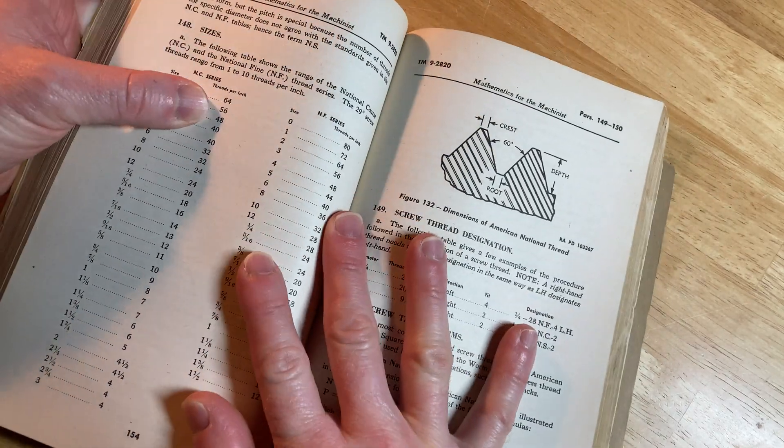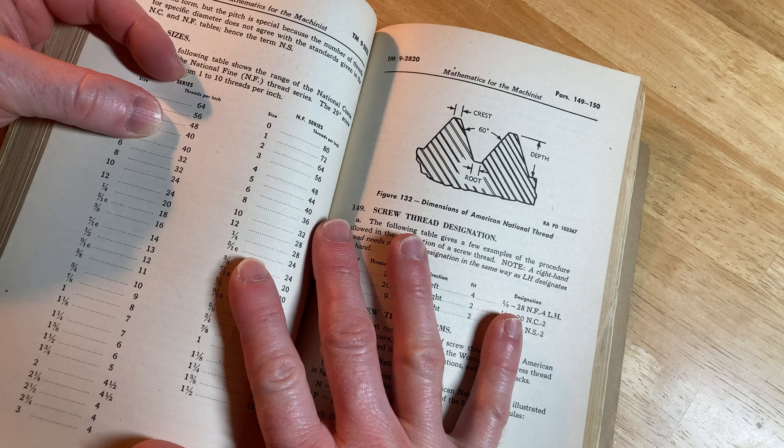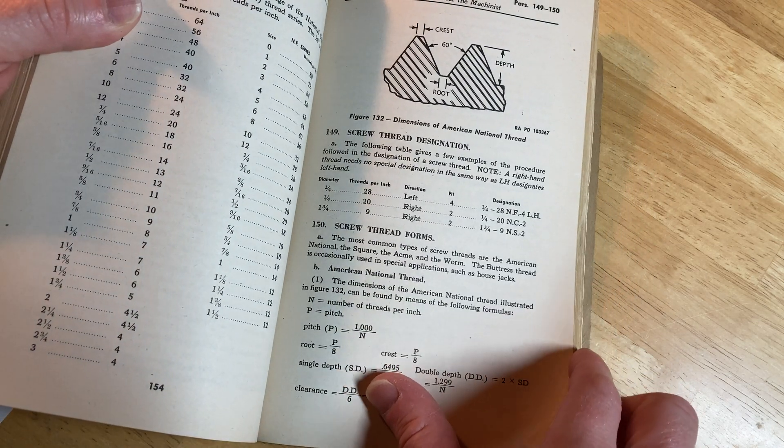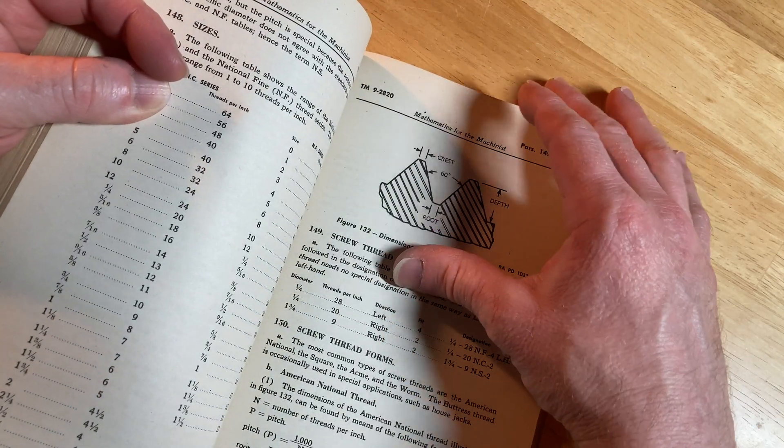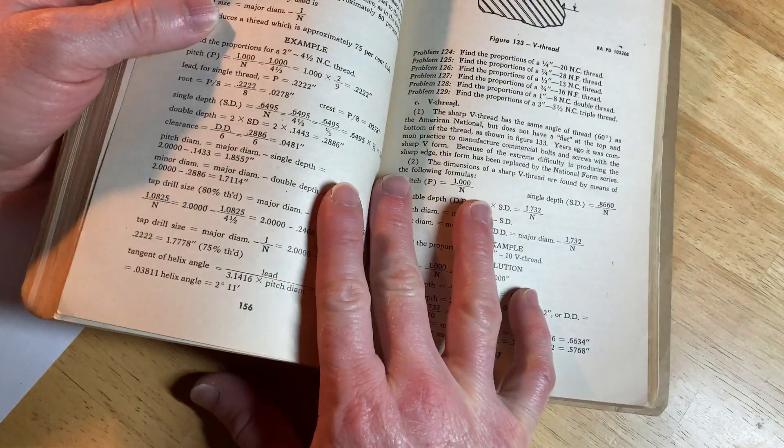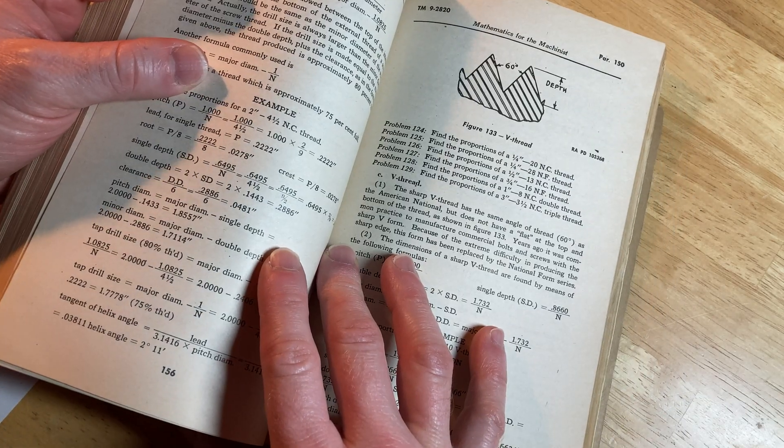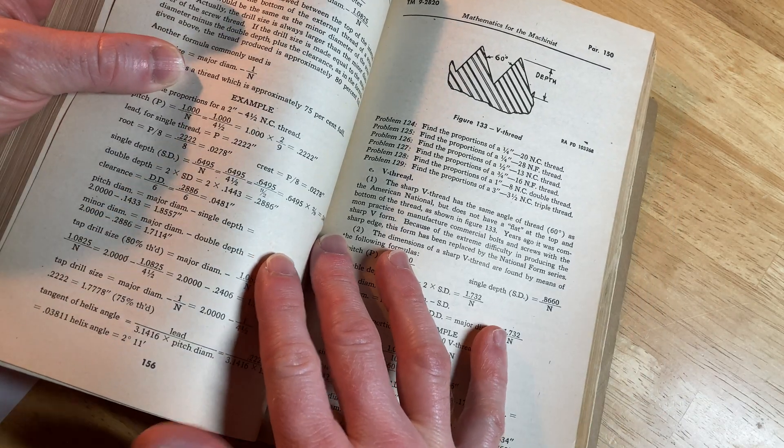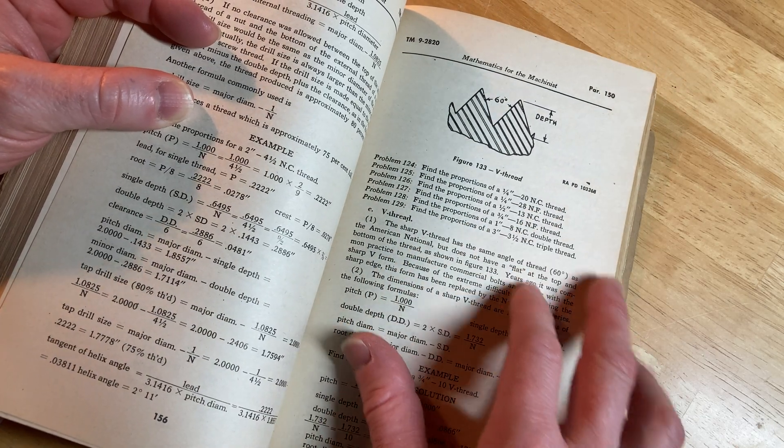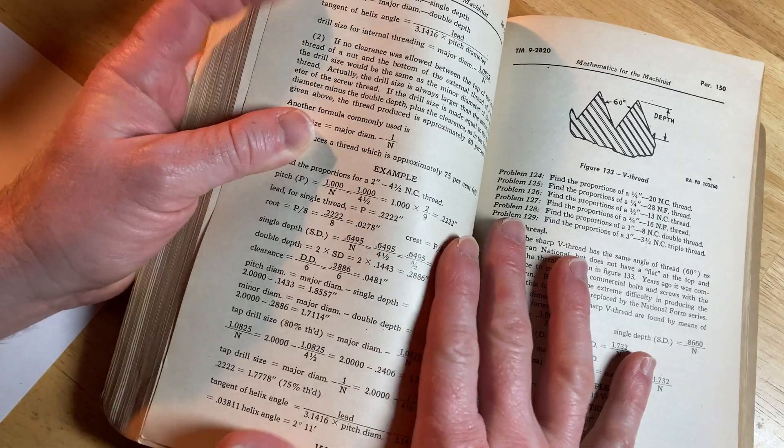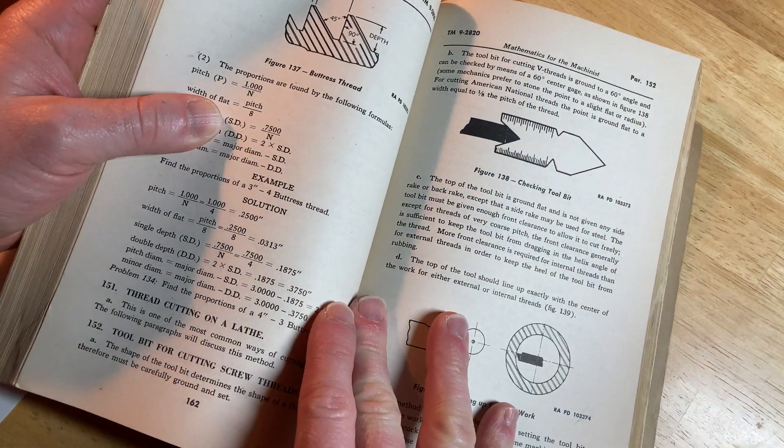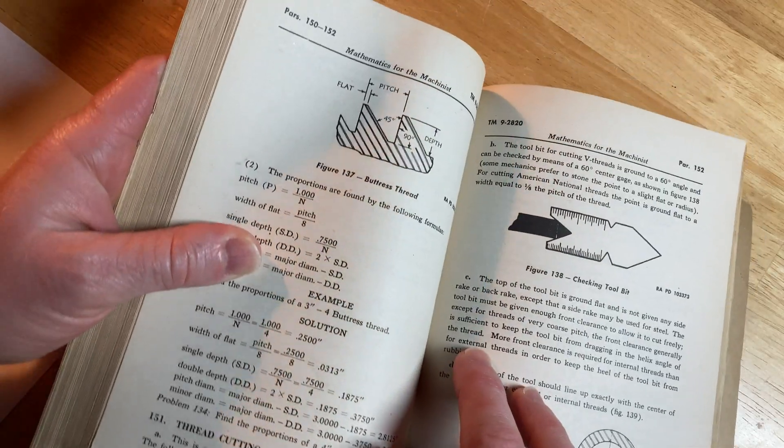Mathematics for the machinist. Dimensions of American national thread. Screw and thread designation. V-thread. Find the proportions of a quarter inch 20 NC thread. Huh. A lot of mathematics here. Shop mathematics. Checking tool bit. Buttress thread.